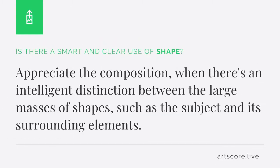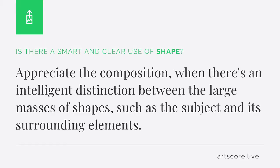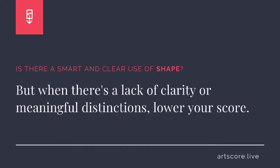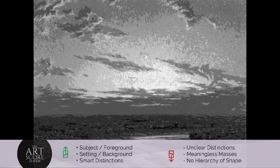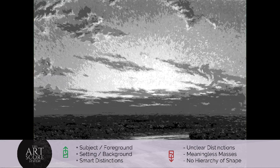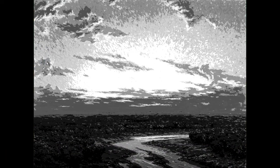Shape. Is there a smart and clear use of shape? Appreciate the composition when there's an intelligent distinction between the large masses of shapes, such as the subject and its surrounding elements. But when there's a lack of clarity or meaningful distinctions, lower your score. I scored the artwork a 7. I see the distinctions between the foreground and background elements.